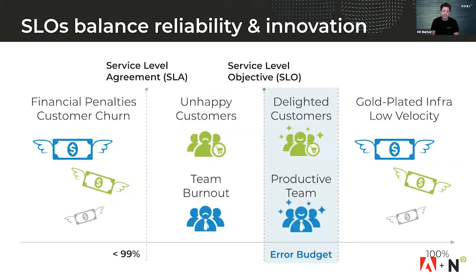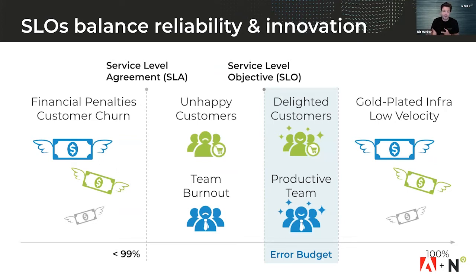Unfortunately, reliability falls on a spectrum. If you have too low of reliability, your customers are gonna find some other way to accomplish their task. If you're below a certain threshold, like an SLA, you may even be on the hook to pay out credits to customers if they tell you about the SLA violation. So low reliability is bad. But on the other end of the spectrum, as you try to achieve 100% reliability, it gets increasingly more and more expensive to hit that target. We call this the sort of gold-plated infrastructure.